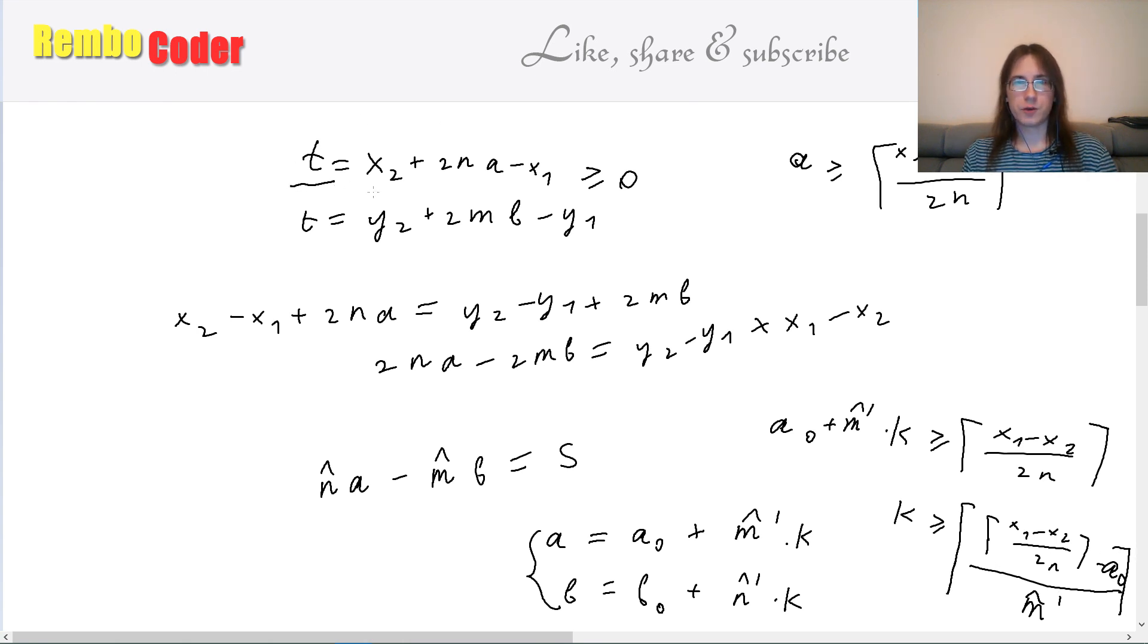As we are searching for the first moment in time when we hit our goal, we want to minimize t, thus we want to minimize a, thus we want to minimize k. So the minimal possible k for which this is true is equal to the lower boundary for k. Thus we have a formula for k which we'll insert into that formula and that formula and thus find the exact point in time and in space where we hit our goal.